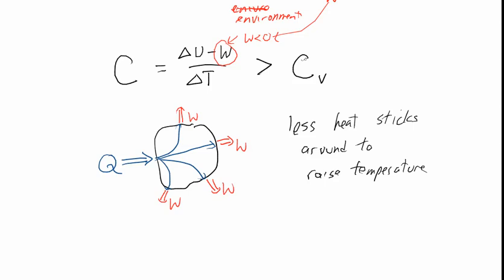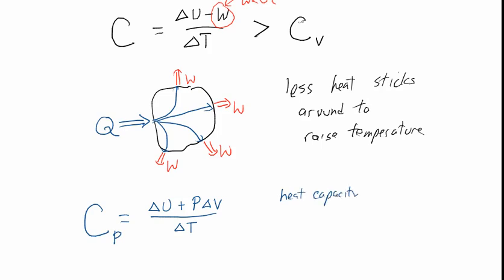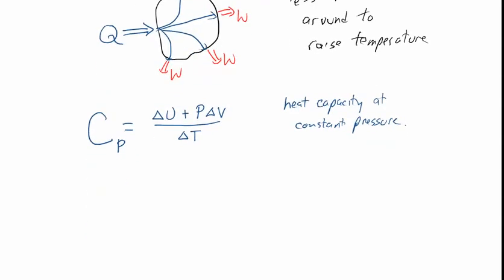We have a formula for W for a gas, so we can plug that in. For an ideal gas, C is equal to delta U minus W, where W equals P delta V — assuming pressure is constant so we don't have to integrate — all divided by delta T. This is called the heat capacity at constant pressure. We can break it into two parts: delta U over delta T, plus P times delta V over delta T. The first term is the heat capacity at constant volume, plus this extra term proportional to how much the volume of the gas changes.